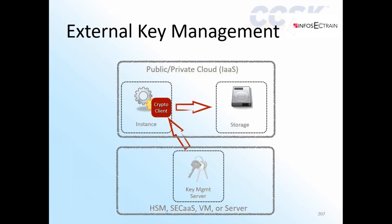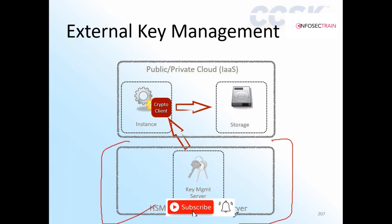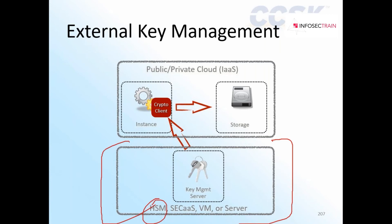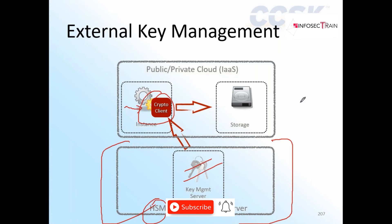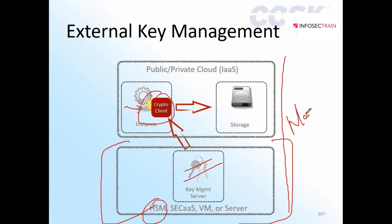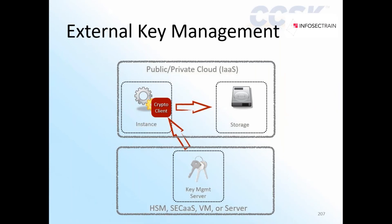The next model is external key management. The encryption engine is in the instance and used to encrypt an external storage volume. A dedicated device — such as an HSM — or dedicated server handles the encryption separately. The key file is in a separate component from the encryption engine. This is the most effective model for cloud because it is more secure.